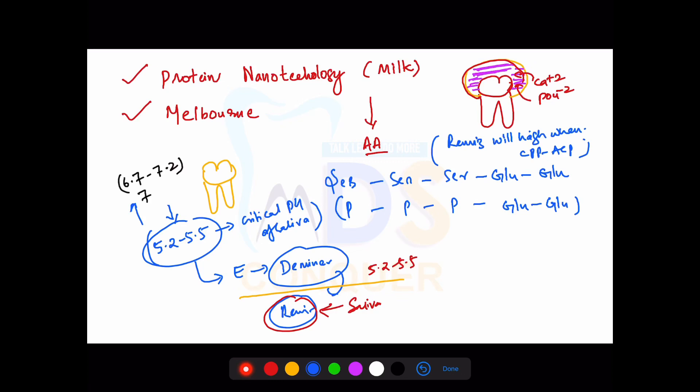The chances of remineralization will be high when CPP-ACP is used. That is the main reason why this agent is being added to composites. Whenever there is critical pH and demineralization, the CPP-ACP in the composite releases into the oral cavity and remineralization chances are increased.